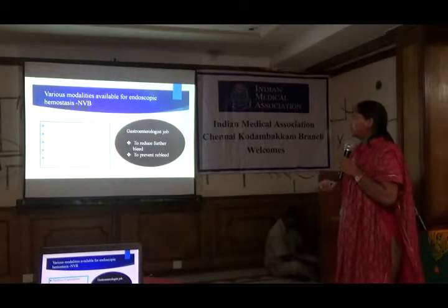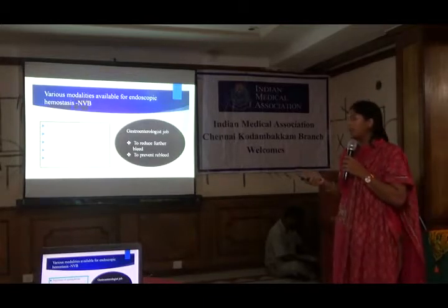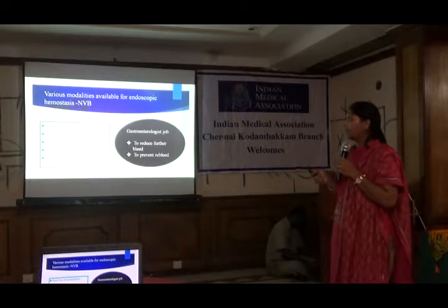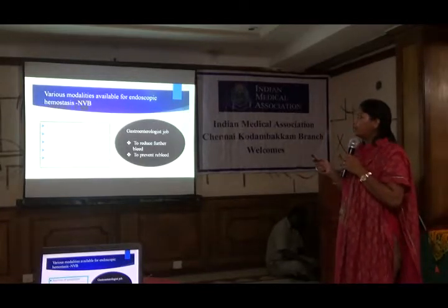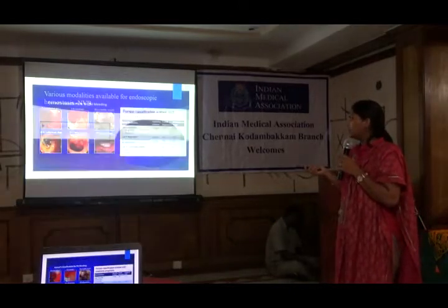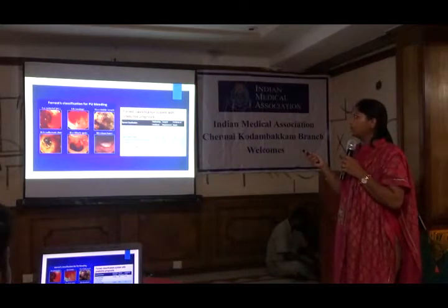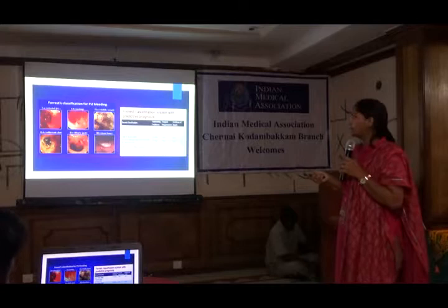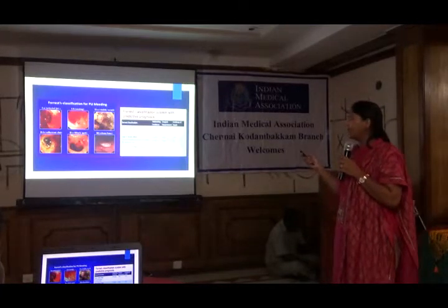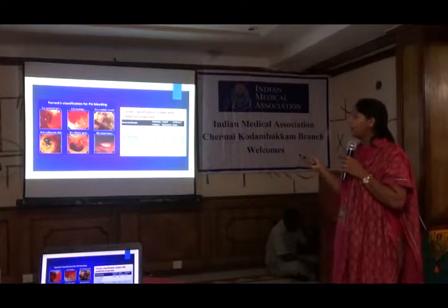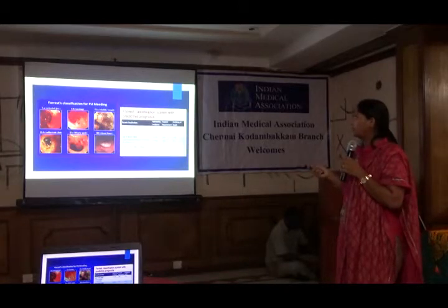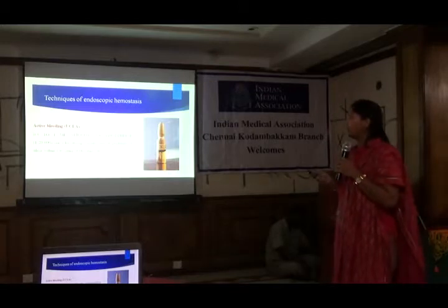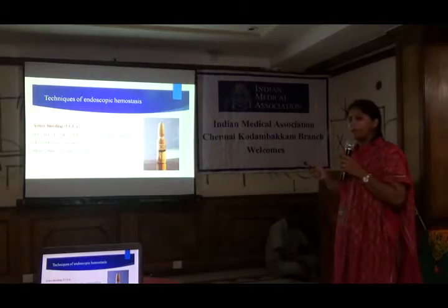As gastroenterologists, our aim through endoscopy and endoscopic therapies is to reduce further bleed and prevent re-bleed. For non-variceal bleeds, techniques include injecting adrenaline at the bleeding site, heater probes, monopolar probe therapies, APC, hemo sprays, and hemoclips. Ulcers are classified using the Forrest classification, which predicts re-bleeding incidence, need for surgery, and mortality. Forrest type 3 — flat spot or clean base — is safe. Actively oozing or spurting ulcers carry a high chance of re-bleeding and require endoscopic therapy. Adrenaline 1:20,000 is injected in four quadrants using a sclerotherapy needle, but combination endoscopic therapy is often required.